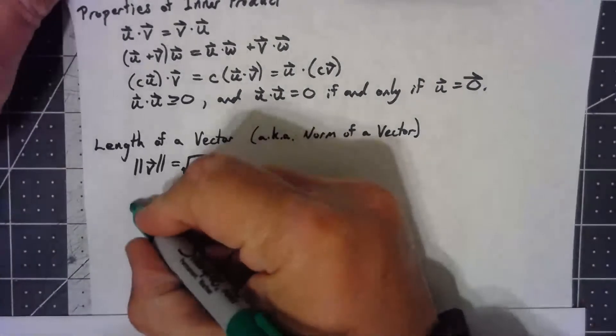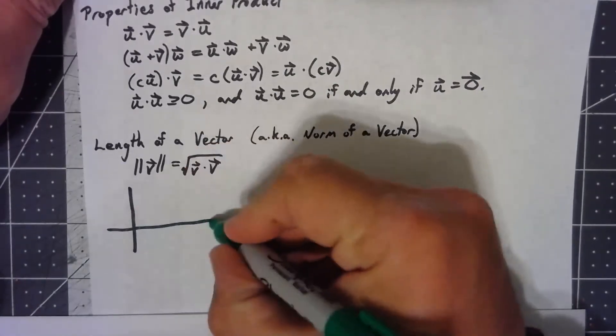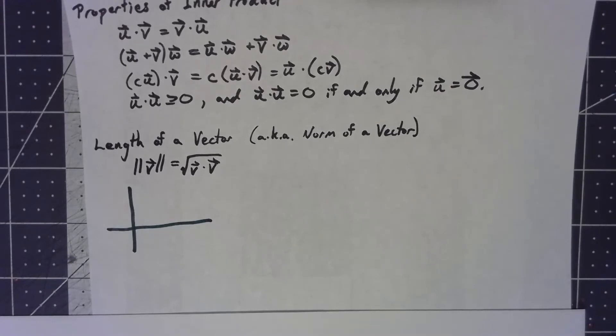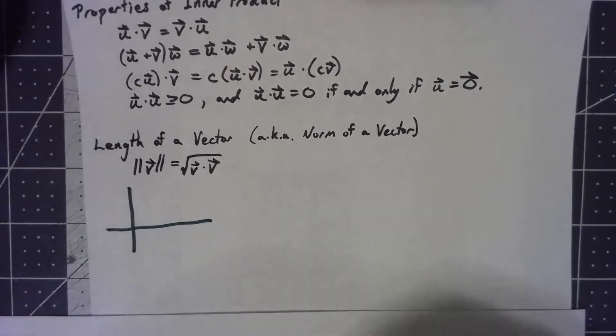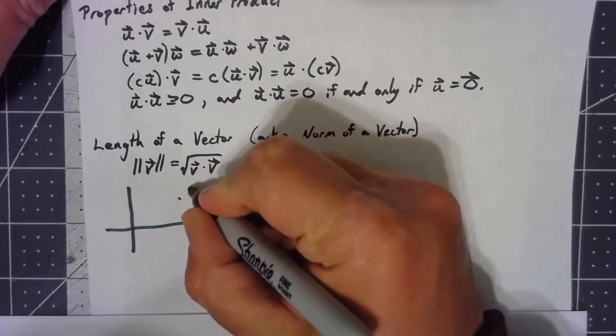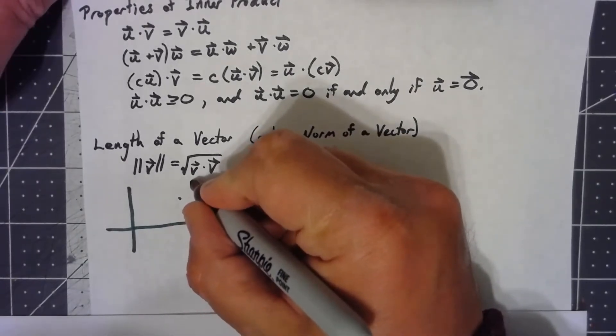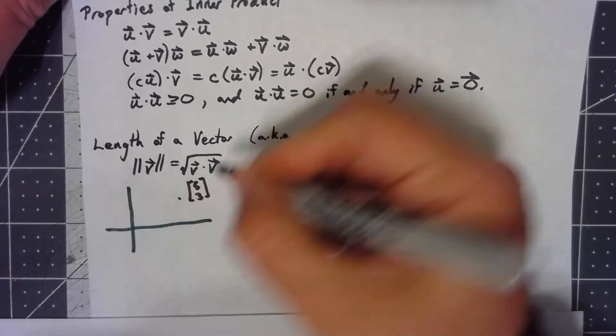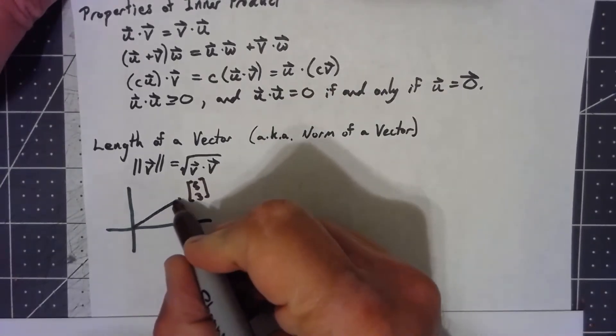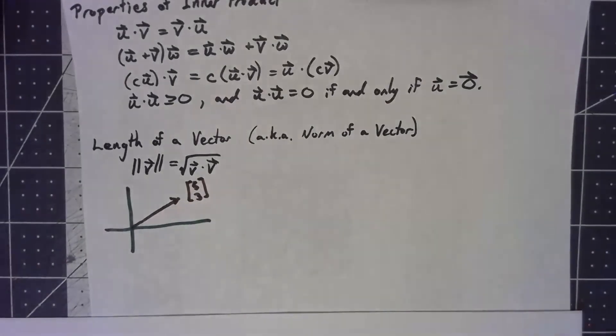Well, one way to think about this is actually geometrically. Let's say I've got a vector and let's keep it positive. Let's say I've got a vector something like 5, 3. And so I can say this is a vector going to there.